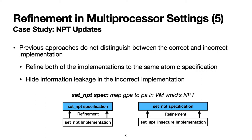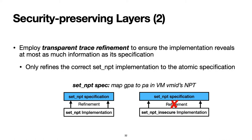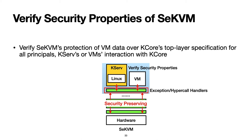We introduce security-preserving layers to ensure refinement does not hide information leakage and preserves security properties. Security-preserving layers employ transparent trace refinement to track intermediate updates, ensuring that the implementation reveals at most as much information as its specification so that refinement can preserve security. Using security-preserving layers, we prove that the correct setMPT implementation refines the atomic specification, but the incorrect implementation that includes multiple updates does not. We prove SCKVM's protection of VM data over KCore's specification at its top layer for all principals, including KSERV's and VM's interactions with KCore, guaranteeing security properties hold on the implementation.